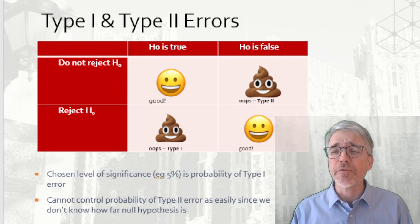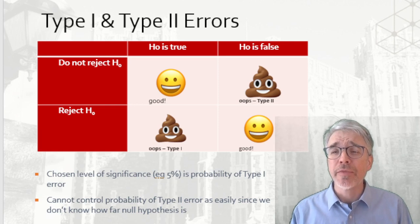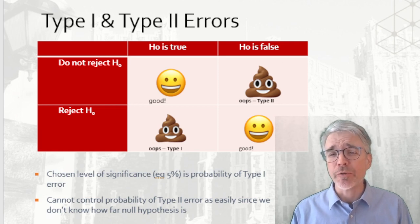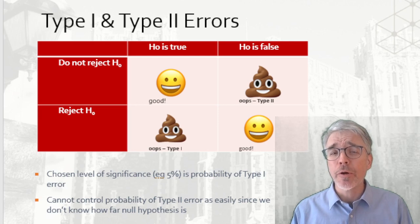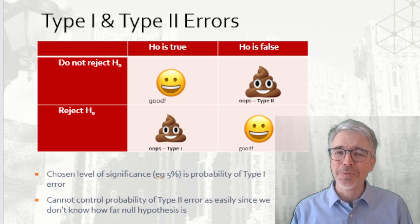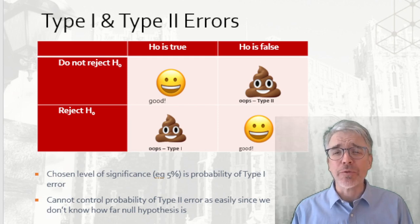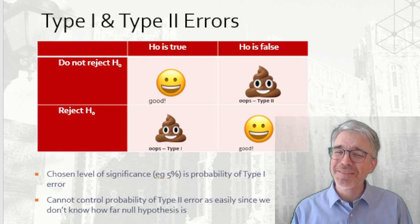There are two possibilities in the rows: either we reject the null hypothesis, or we do not reject the null hypothesis. In the vertical columns, we have two possibilities: either the null hypothesis is true, or the null hypothesis is false. If the null hypothesis is true and we do not reject, that's a win. Similarly, if the null hypothesis is false and we reject the null hypothesis, again, win.